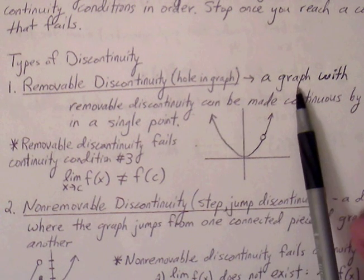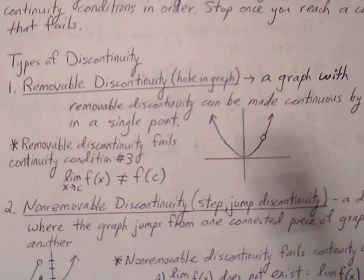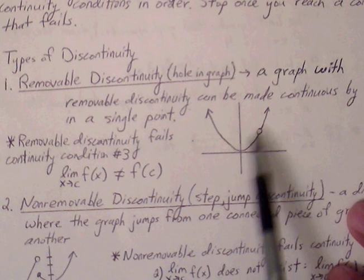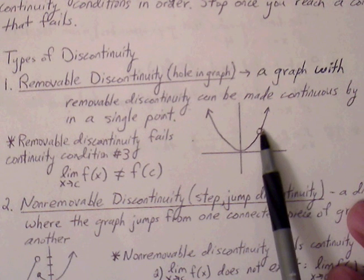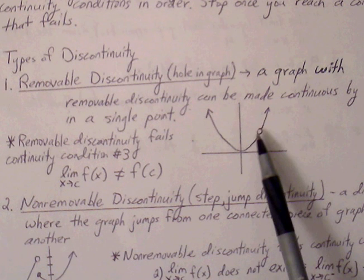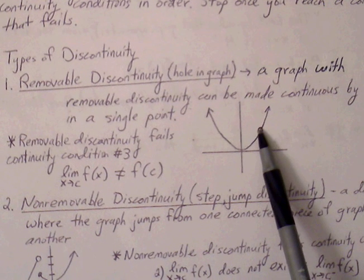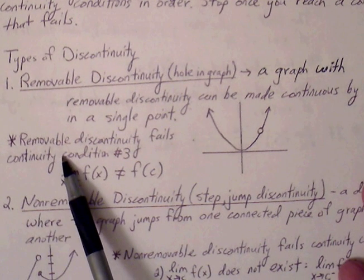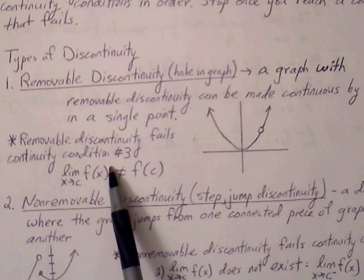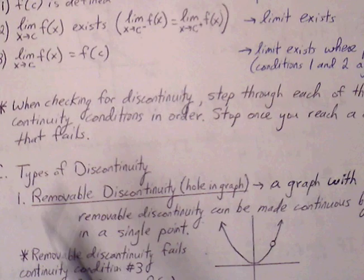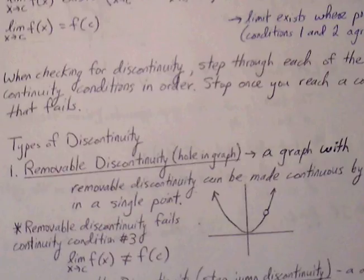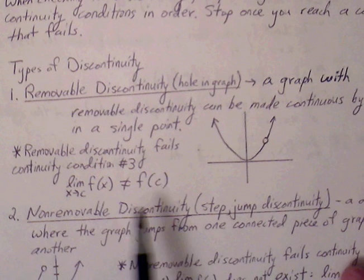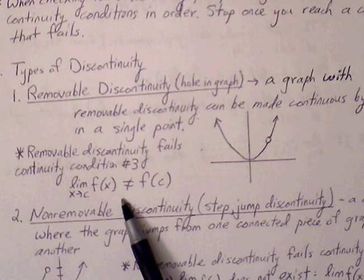A graph with removable discontinuity can be made continuous by filling in a single point. The limit exists, but the only thing preventing continuity is filling in that hole with an ordered pair. This means the third condition fails — the limit does not equal the ordered pair, and the first and second conditions do not agree.